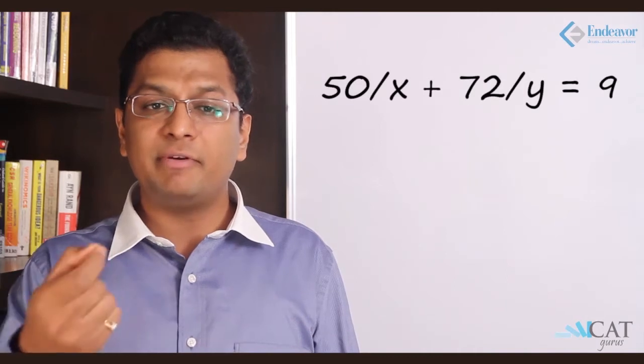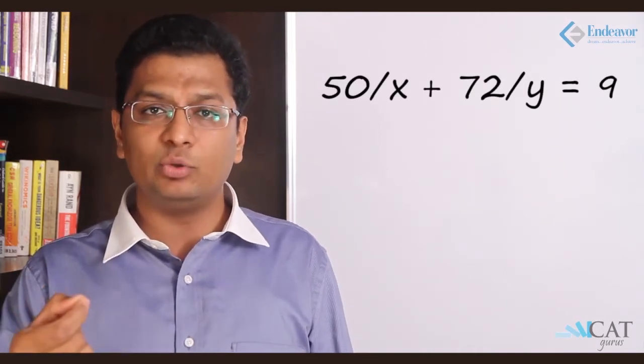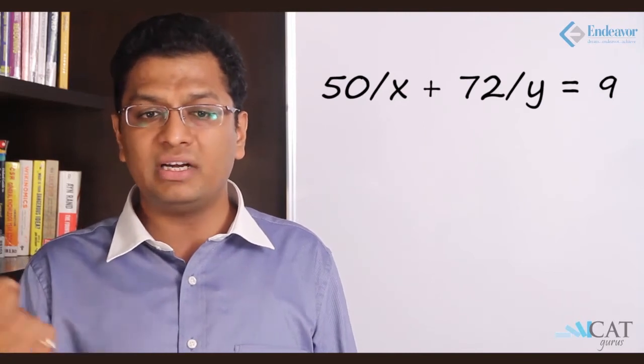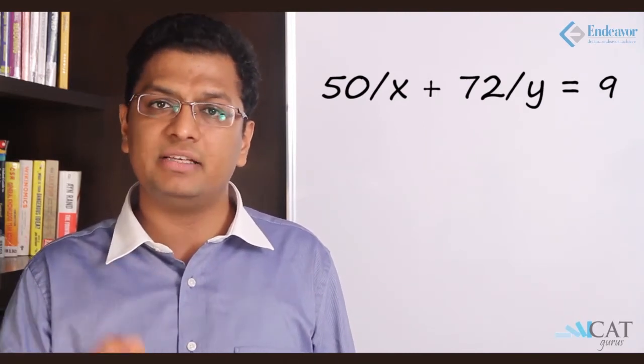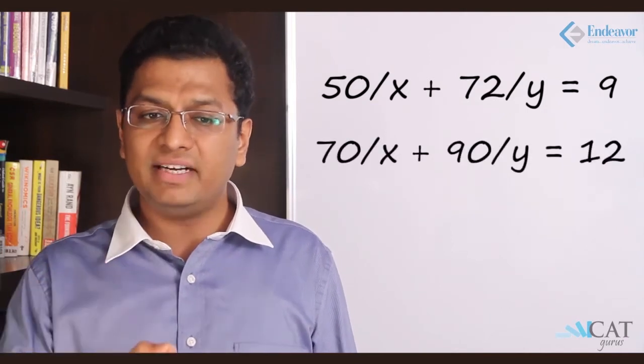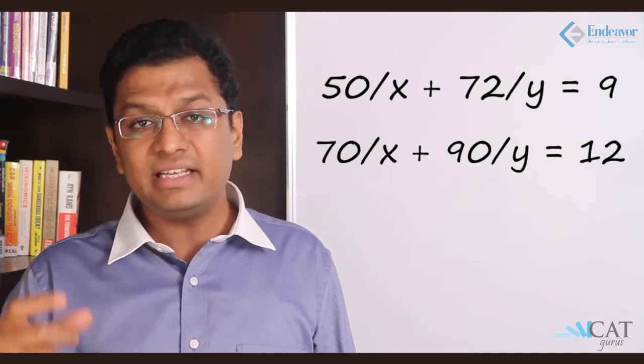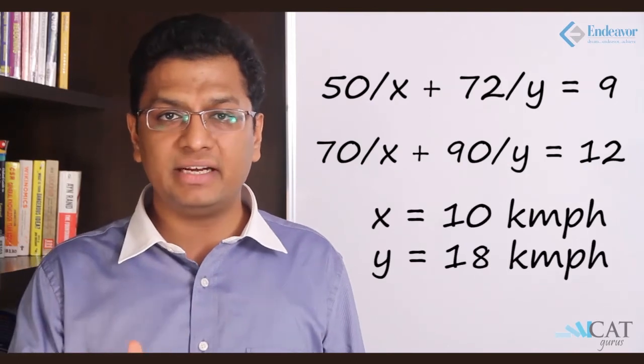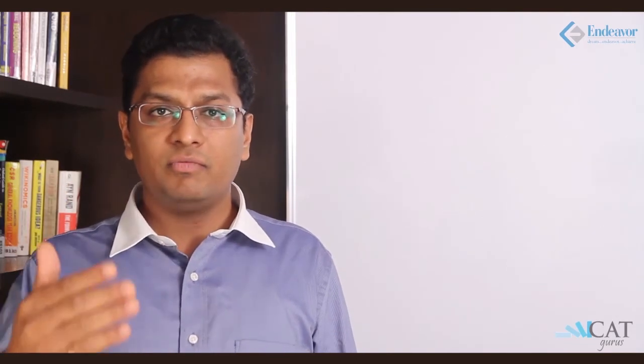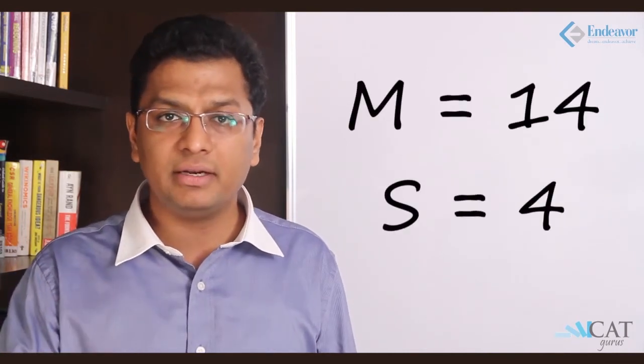If you substitute directly it becomes too complicated, so let's simplify. Let's assume m minus s, the upstream speed, to be x and m plus s, the downstream speed, to be y. So upstream 50 km divided by x plus 72 km divided by y equals 9, giving us: 50/x + 72/y = 9. Similarly, 70/x + 90/y = 12. Solving these two linear equations, we get x equals 10 and y equals 18. Substituting back into m plus s and m minus s, we get m equals 14 and s equals 4.